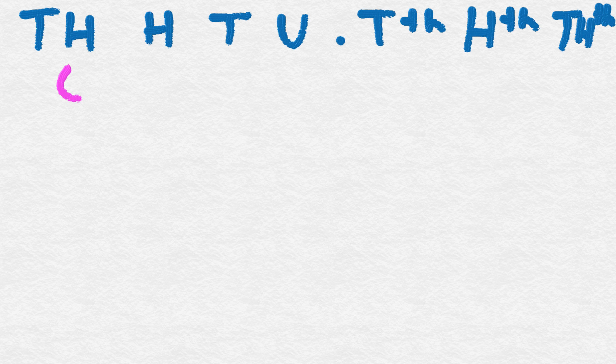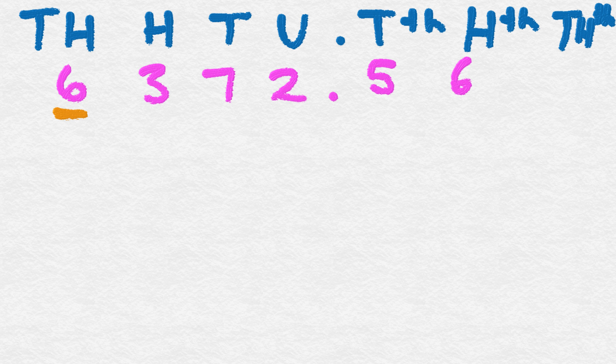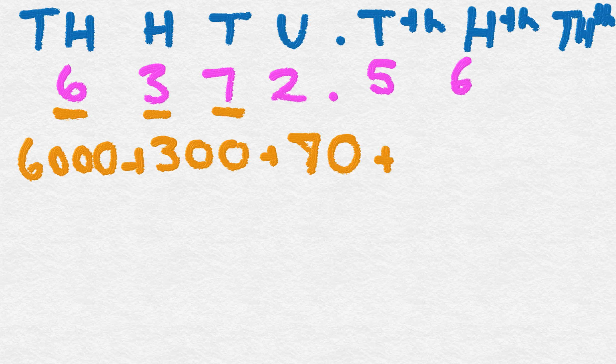Let's have a look at another example. So first of all, we'll focus on our thousands. We've got 6,000, plus 300, plus 70, plus 2 units, plus, now let's write it as a fraction first, 5 tenths, plus 6 hundredths.